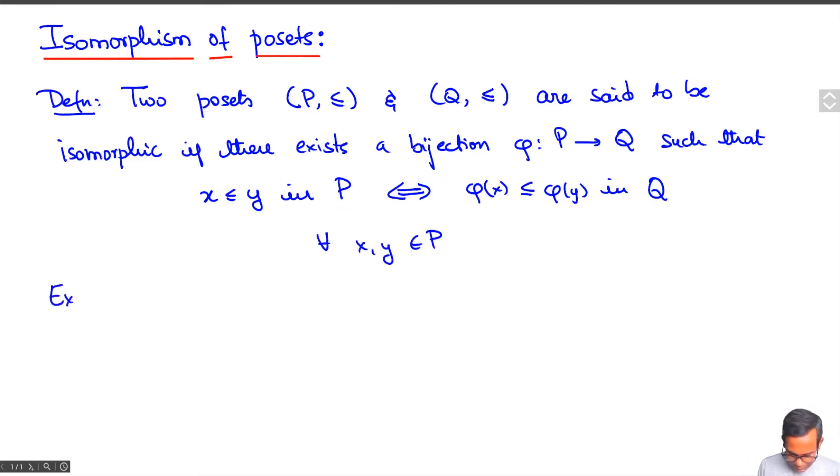Let's look at a simple example of this. Just look at the partial ordered set n. So this is a chain of length n and this is isomorphic to the interval a, a plus n minus 1. This is another chain of length n.